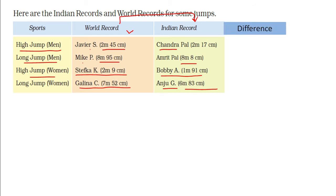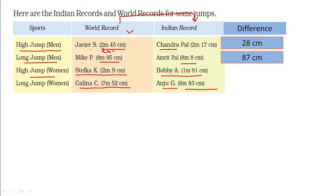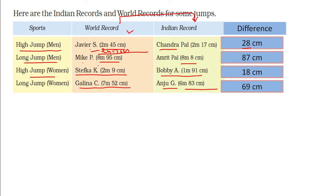Now let's see the differences. In men's high jump, the world record is 28 centimeters higher than the Indian record. In men's long jump, the world record is 87 centimeters higher. For women's high jump, the difference is 18 centimeters, and for women's long jump it is 69 centimeters. We subtract meters from meters and centimeters from centimeters.